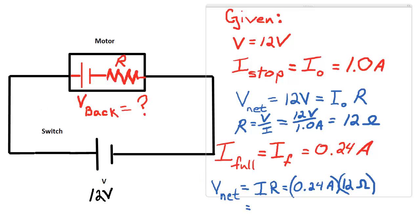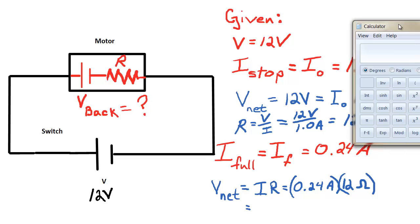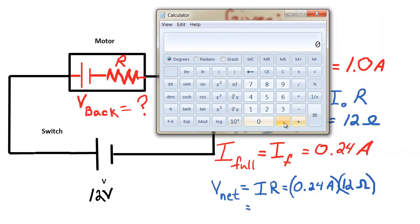So using Ohm's Law, we simply get V is equal to IR. Our current is 0.24 amps. Our resistance is 12. And when I multiply those two together, I should get V-net. Let's do that. 0.24 times 12 gives us 2.88 volts.